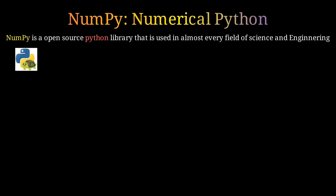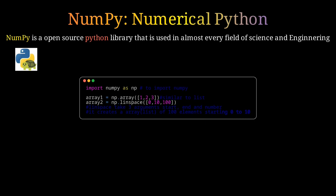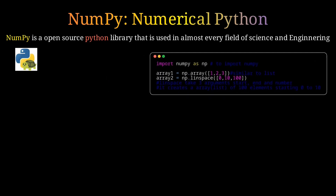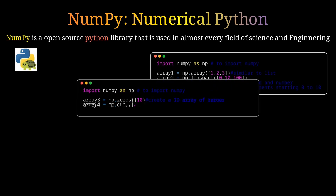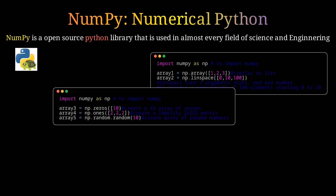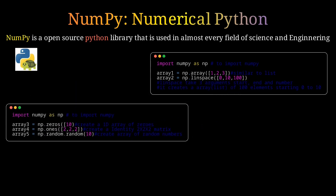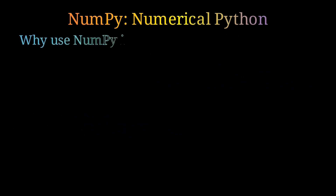NumPy helps to speed up the code execution time. There are a few examples of codes which create lists similar to what we use in normal Python. You can find more examples at the end of the video, or visit the GitHub or documentation.